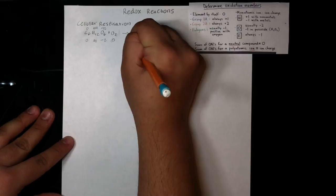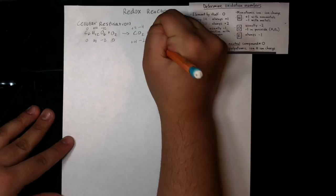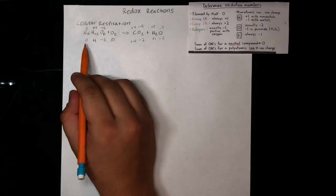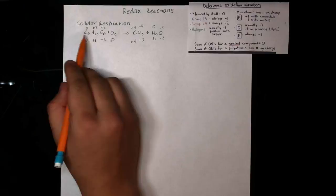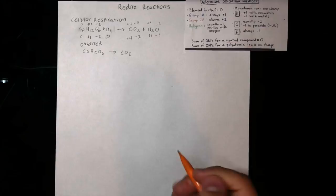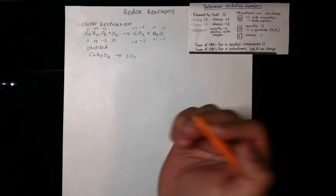And for water: oxygen is negative two, which gives us negative two, and hydrogen is plus one. Multiplying those two together gives us plus two, so this is also balanced. Here we have carbon losing electrons and getting a plus four oxidation number, so glucose is being oxidized to make carbon dioxide. And since oxygen is gaining electrons and gets an oxidation number of negative two, oxygen is being reduced.